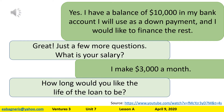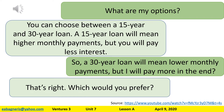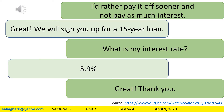Will you be making a down payment on your new house? Yes, I have a balance of $10,000 in my bank account that I will use as a down payment, and I would like to finance the rest. Great. Just a few more questions — what is your salary? I make $3,000 a month. Okay, and how long would you like the life of the loan to be? What are my options? You can choose between a 15-year and a 30-year loan. A 15-year loan means higher monthly payments but less interest. A 30-year loan means lower monthly payments but more paid in the end. Which would you prefer? I'd rather pay it off sooner and not pay as much interest. Great, we will sign you up for a 15-year loan. What is my interest rate? Five point nine percent. Great, thank you.